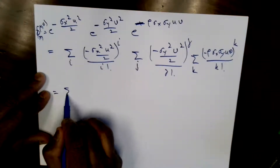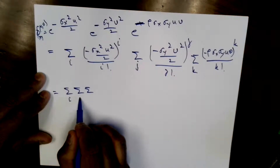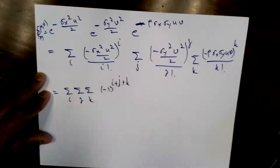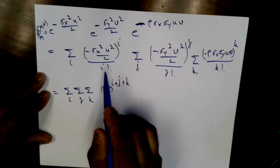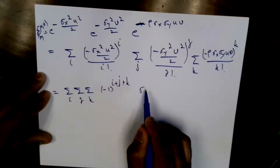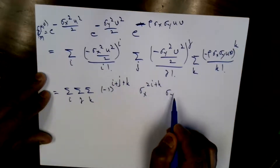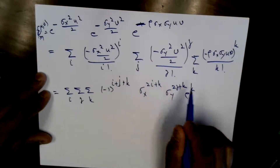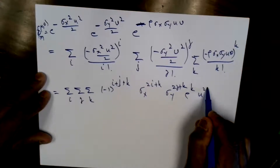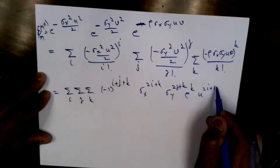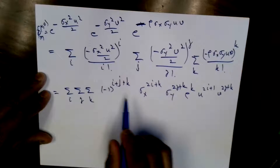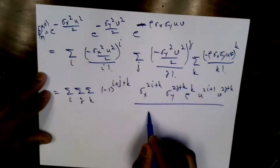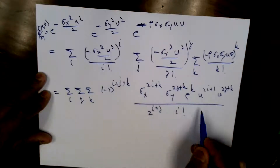Collecting all terms together, the right-hand side becomes a triple summation over i, j, k of: (−1)^(i+j+k) · σx^(2i+k) · σy^(2j+k) · ρ^k · u^(2i+k) · v^(2j+k), divided by 2^(i+j) · i! · j! · k!.